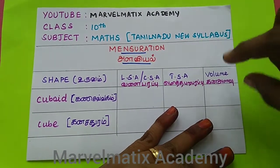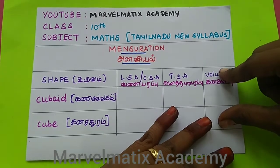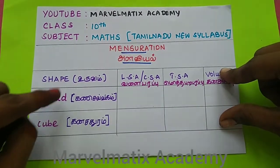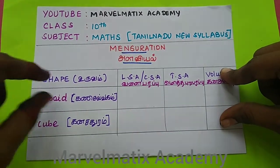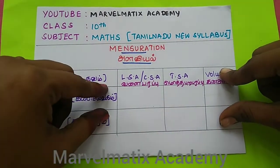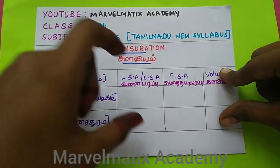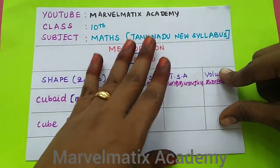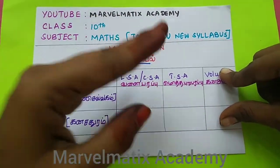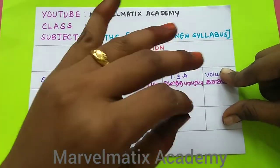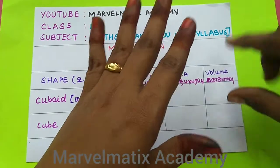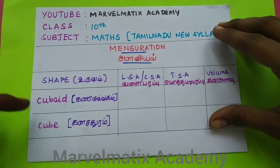Now we can split the formula. This is the cube and cuboid — you can use this. The first exercise covers the basics. If you use this formula, the first formula is easy. So, in this video, we cover the cuboid.